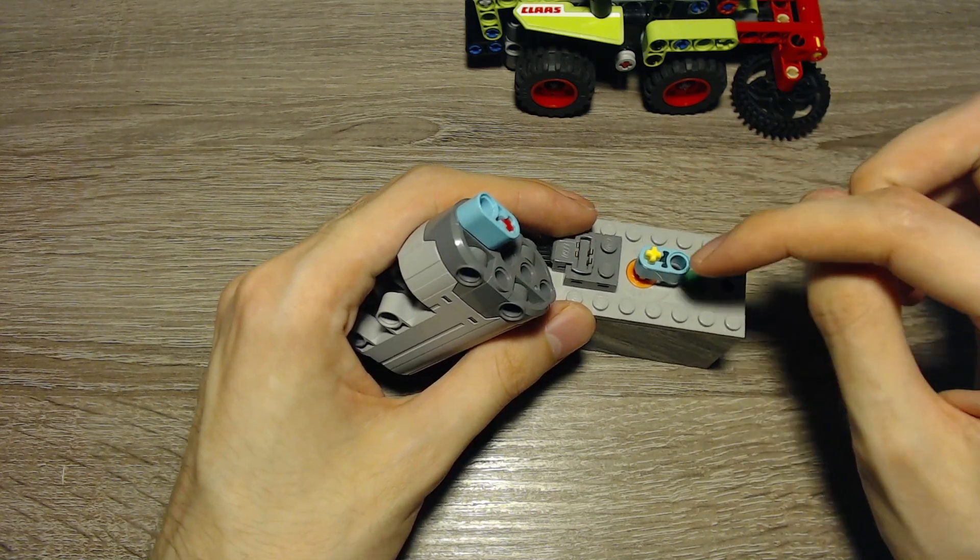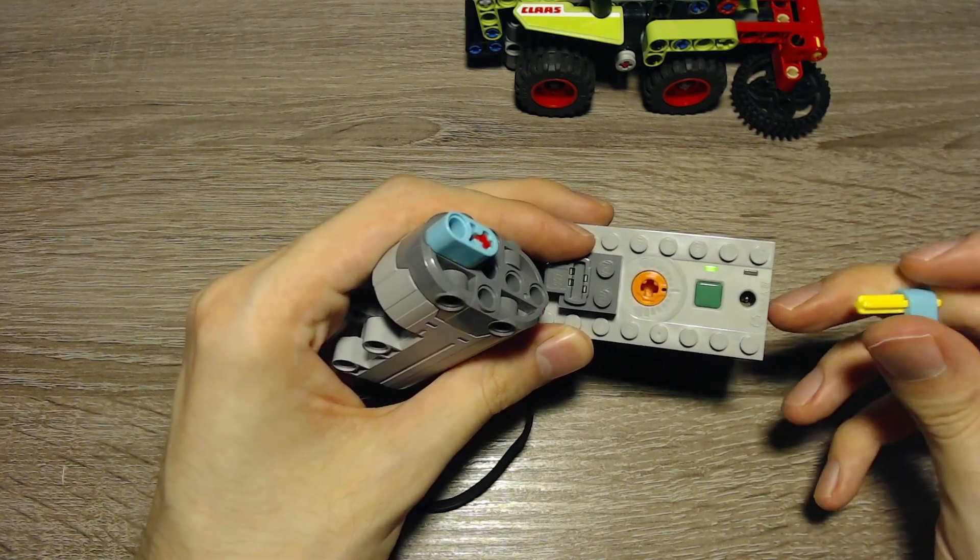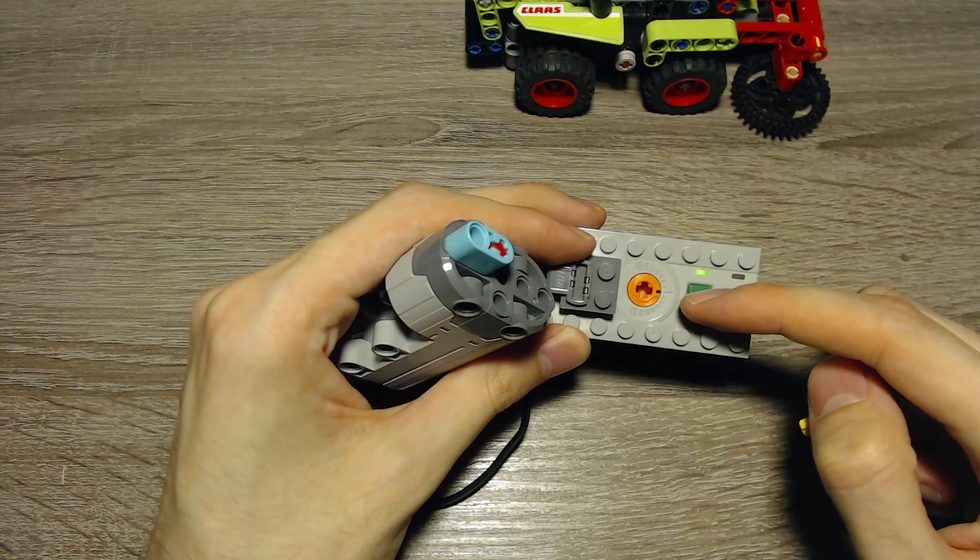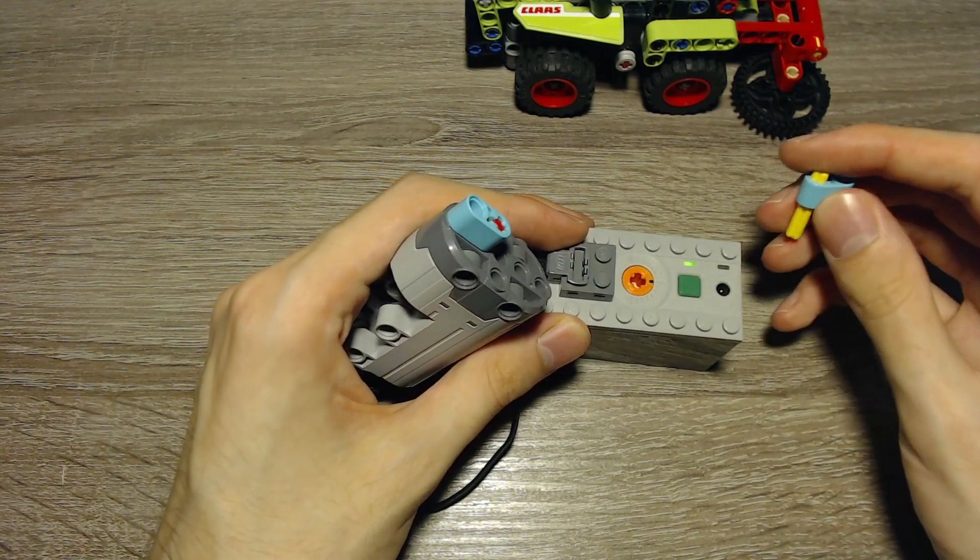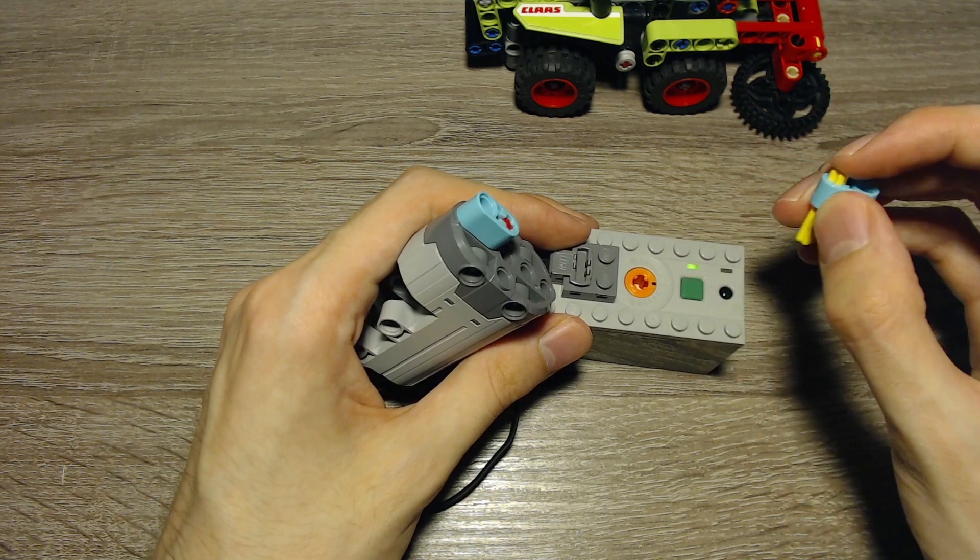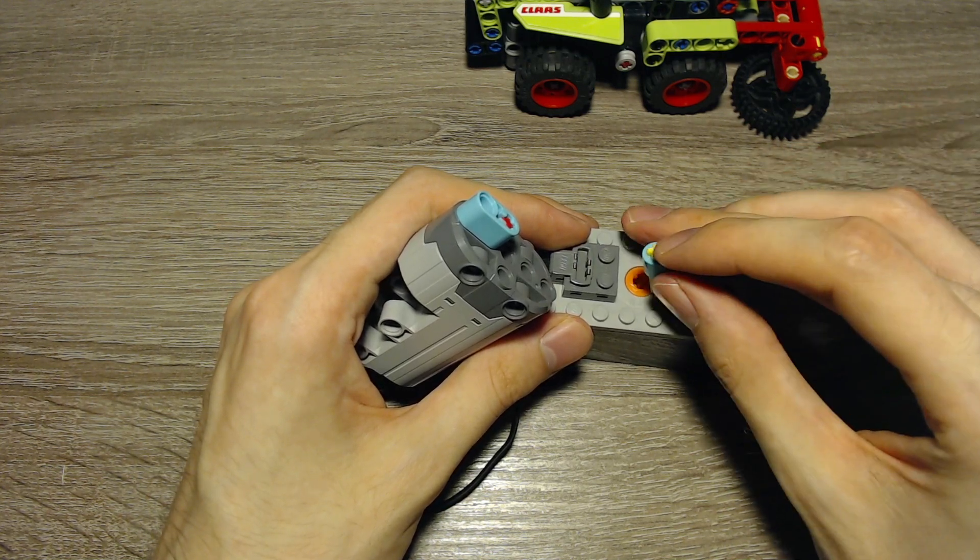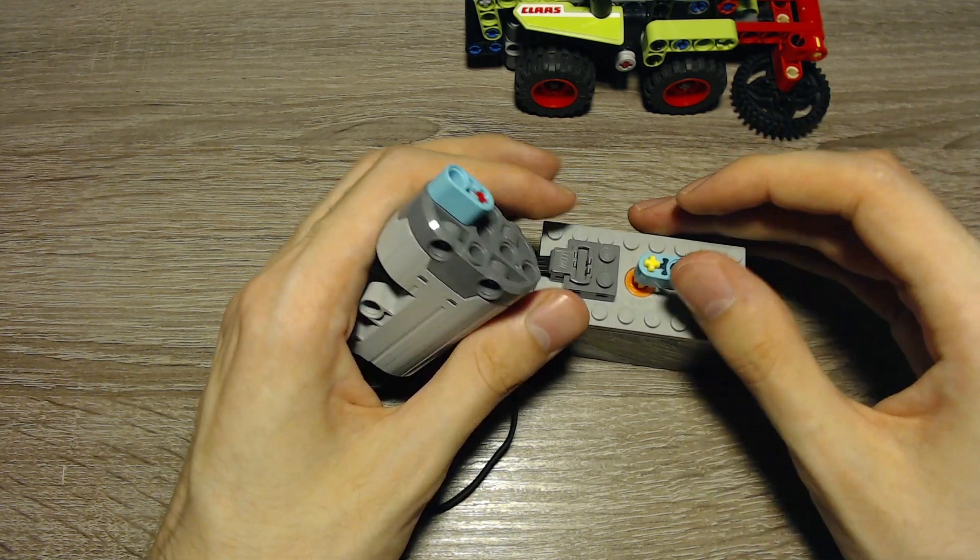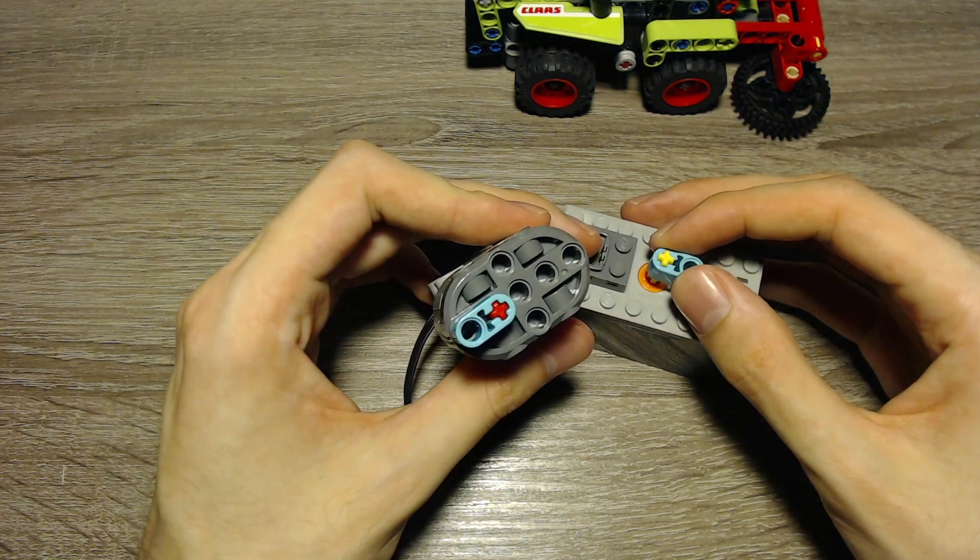And now I can change the position of the dial. This switch has seven positions per direction, and that's normal for Power Functions. You can also use the train motor and the receiver to get these seven positions per direction, but only the rechargeable battery box has them directly on the box.